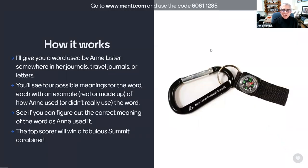Here's how it works. I'll give you a word used by Anne Lister somewhere in her journals, travel journals, or letters. We'll show you four possible meanings for the word, each with an example, real or made up, of how Anne used or didn't really use the word. You'll try to figure out the correct meaning of the word as Anne used it, and you'll get points if you choose the right one. If you're our big winner, you'll soon be the owner of your very own Summit Carabiner. Alex will now explain how you can play.